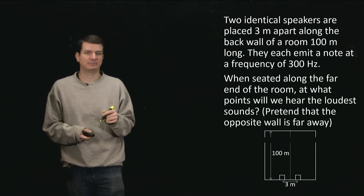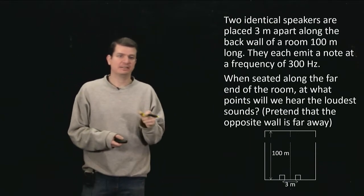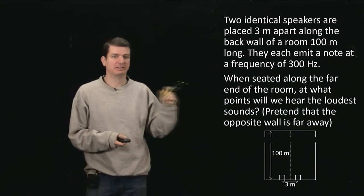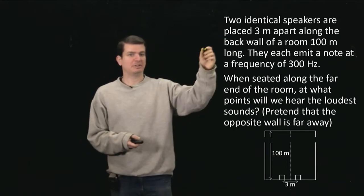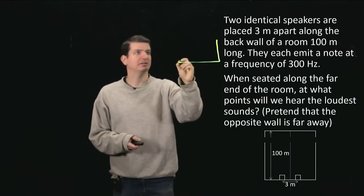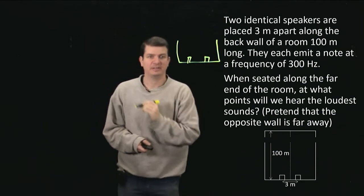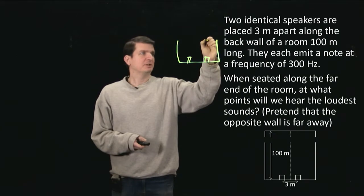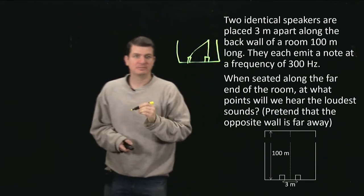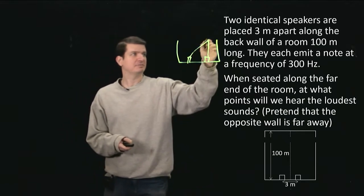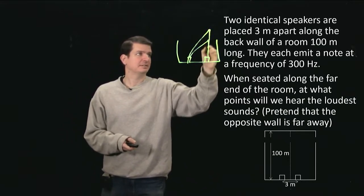So how are we going to figure this out? Where do we need to sit? In order to set this up, we've got to think about this hint: pretend that the opposite wall is far away. Let's think about why we need to do that. So draw a little room, put some speakers in there. If I think about it being short, then the two speakers are sending their waves like this. If I make it a little bit different, then they're sending like that.